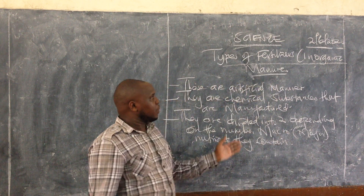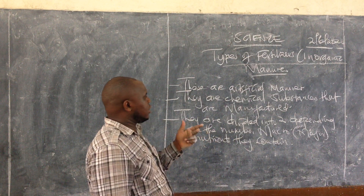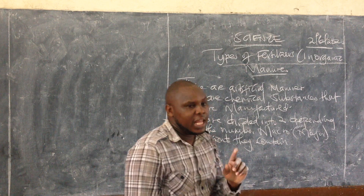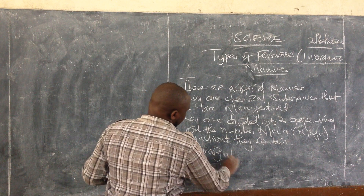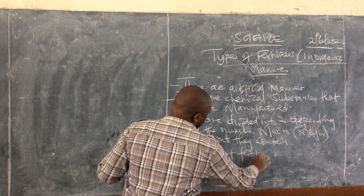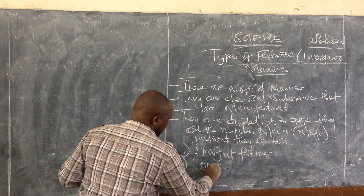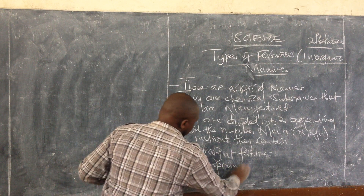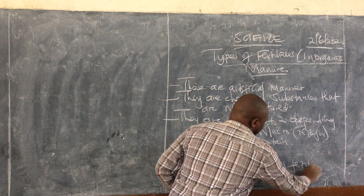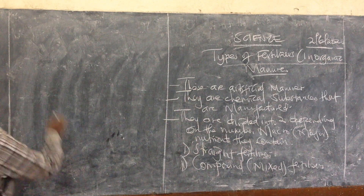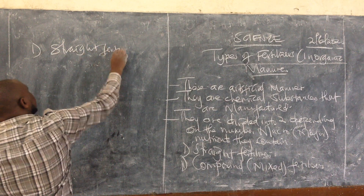So different fertilizers are divided into two according to the number of macronutrients they contain. We have number one, straight fertilizers, and number two, compound fertilizers — also called mixed fertilizers. I want to explain these two categories. Number one: the straight fertilizers.